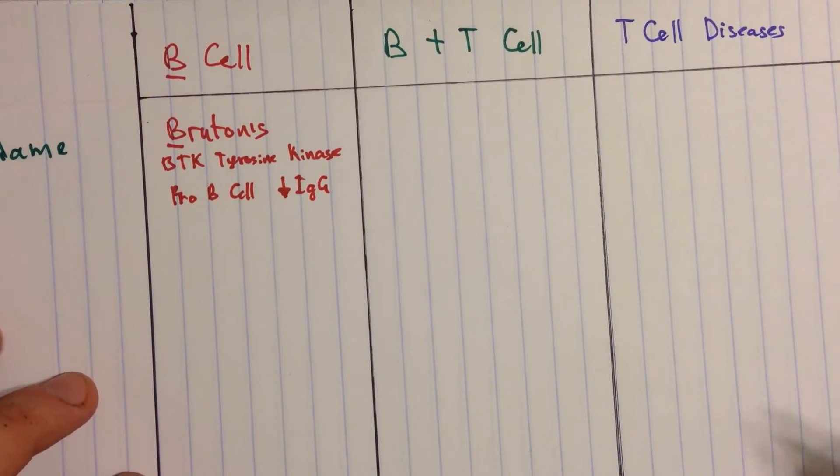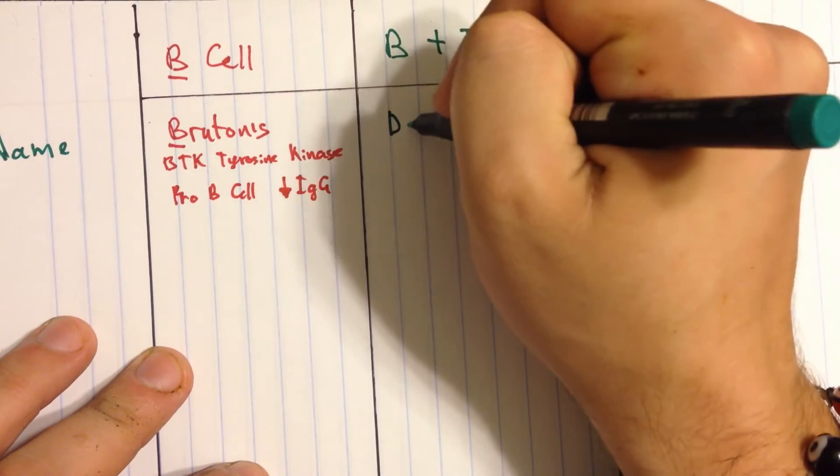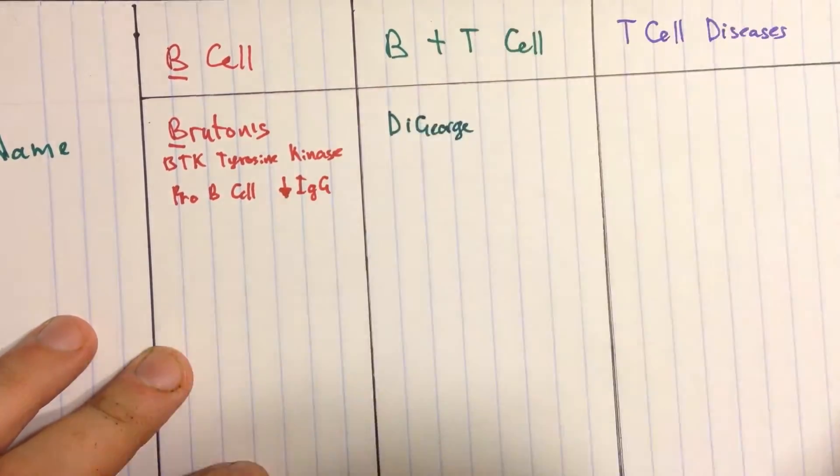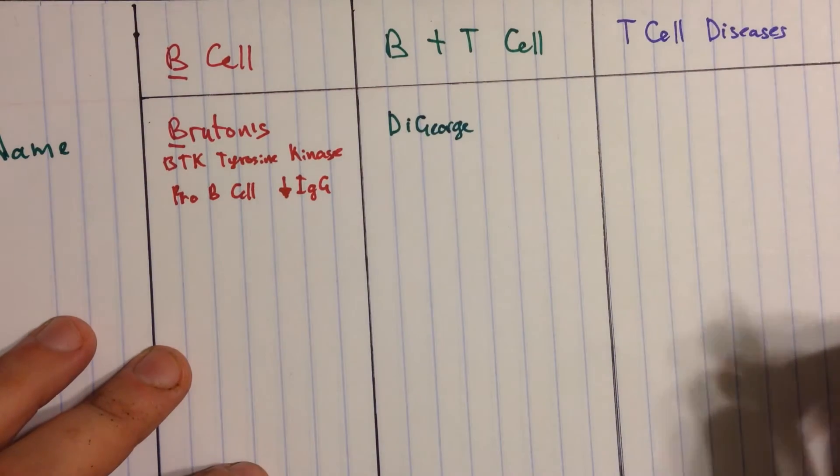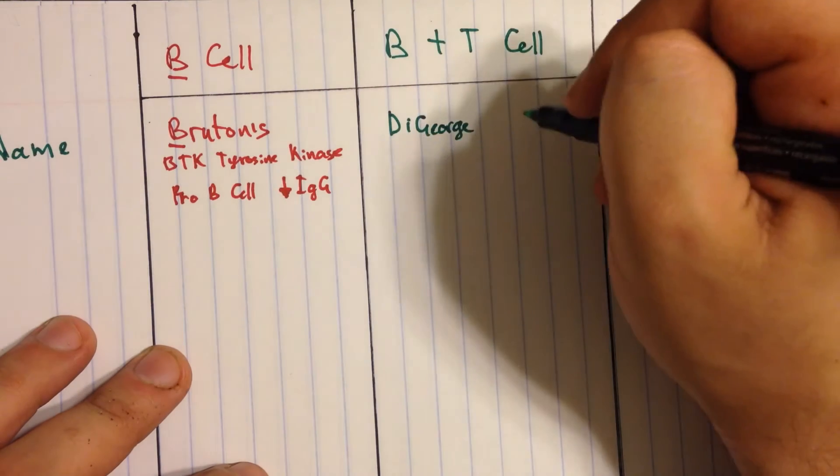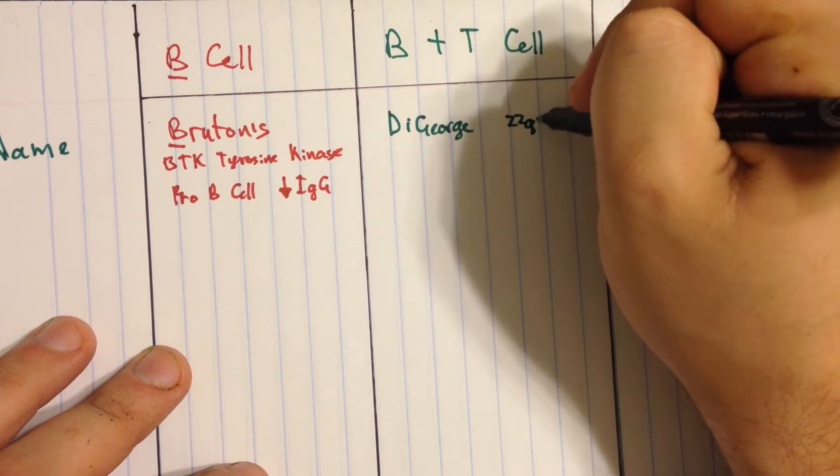Now if we move over to the B and T-cell problems and we're looking for the name disease, this is going to be DiGeorge. Now DiGeorge is a disease which is an inborn disease and you have a mutation on chromosome 22q11.